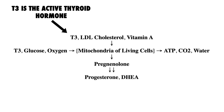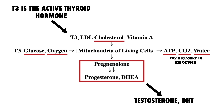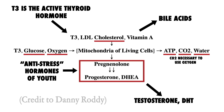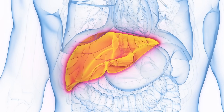The main role of thyroid is to allow your cells to convert glucose into ATP, CO2, heat, and water in the presence of oxygen. Thyroid also helps to convert cholesterol into the downstream steroid hormones, most notably pregnenolone, progesterone, and DHEA, which are three youth hormones that reinforce energy. Thyroid is also involved in the synthesis of bile acids, which support digestion and reinforce metabolism further by aiding the liver and gallbladder.